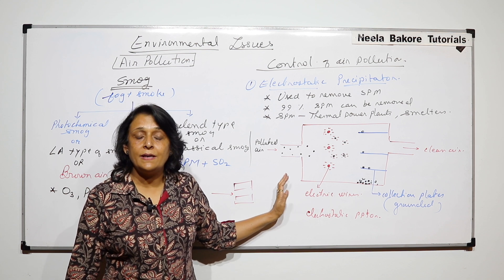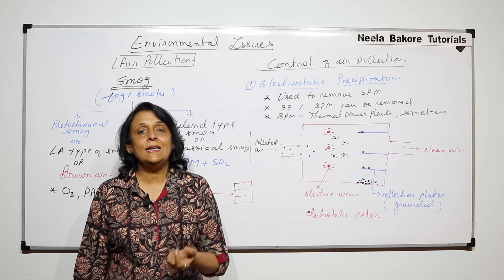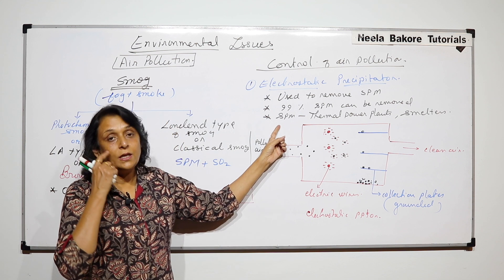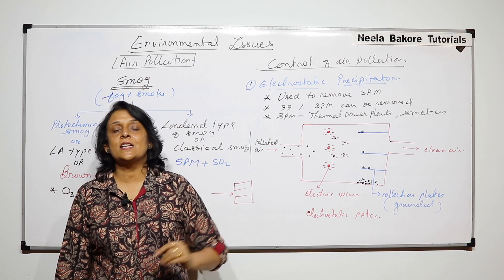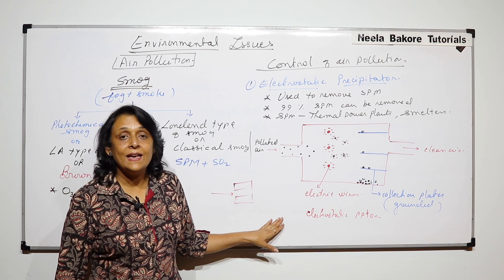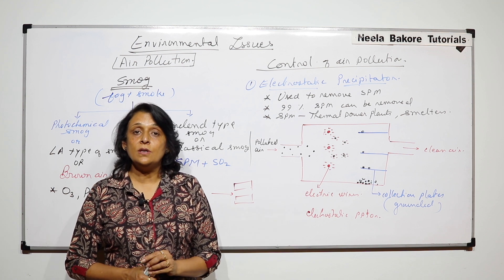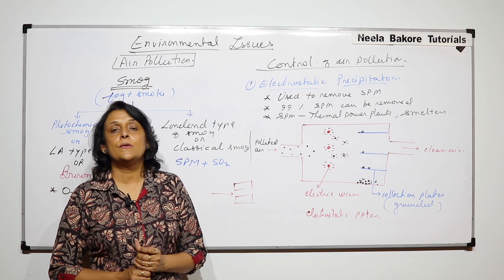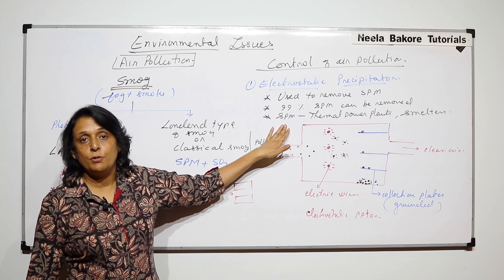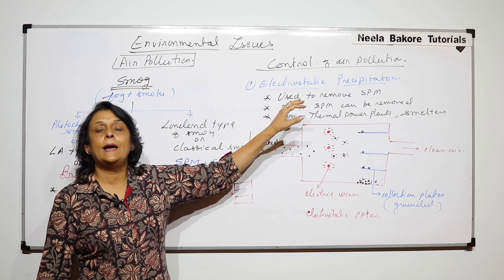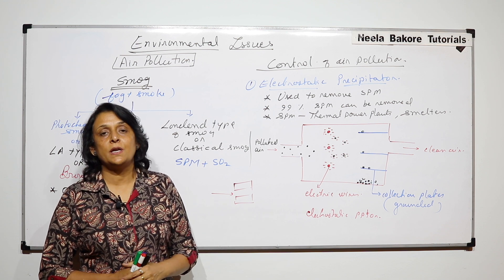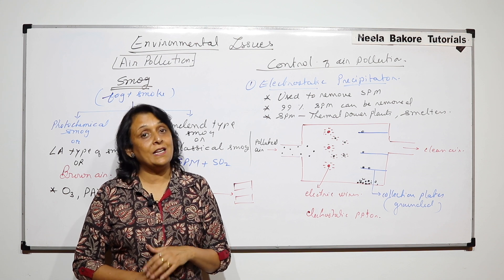And these suspended particulate matter, because they are so tiny, they remain suspended in the air. And that is why we are calling them suspended particulate matter. So if they remain suspended in the air, we are going to inhale them. And when they are inhaled, they again cause inflammation, damage in our respiratory tract, especially in the alveoli. So if we have to remove the air pollution from a thermal power plant or a smelter or similar kind of factories, then electrostatic precipitator is a very good effective device.